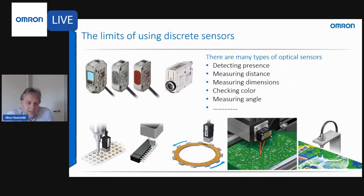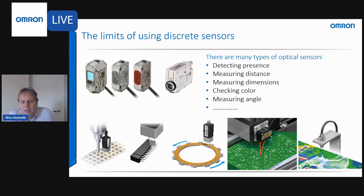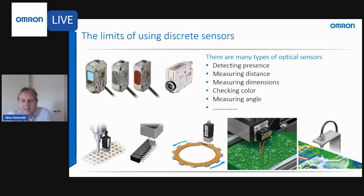Discrete optical sensors have been around for decades and are commonly used in automation systems for tasks such as detecting the presence of objects, measuring distances, measuring dimensions or angles, or checking color. There are also specialty sensors available for many other parameters. Traditional sensors deploy a variety of technologies to perform a very specific task in a very specific environment, and they are very durable and easy to use as long as the inspections you need to perform remain relatively simple.